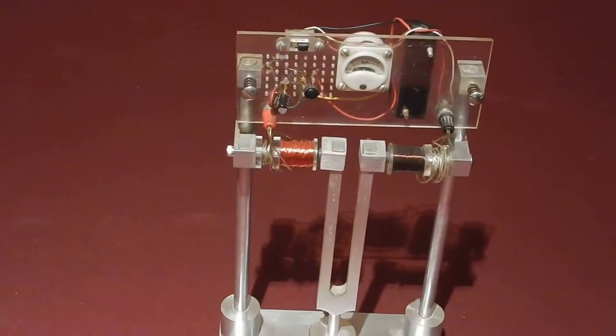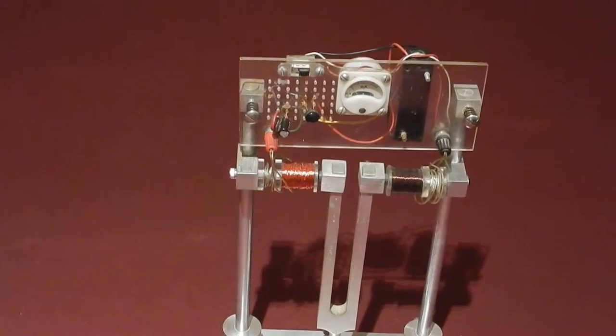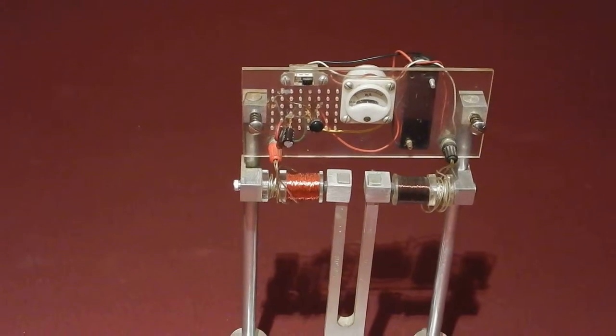This is a giant version of the Bulova Accutron watch. It has a tuning fork and electronics very similar to the watch itself.